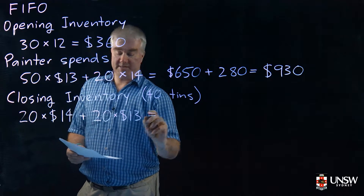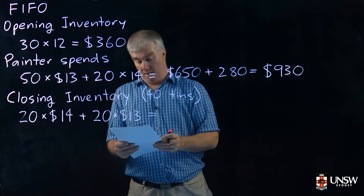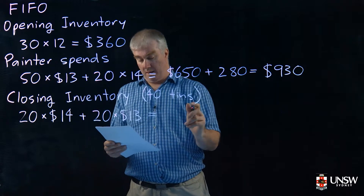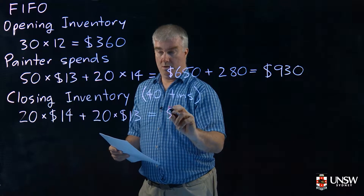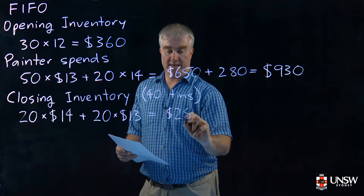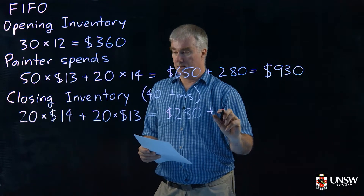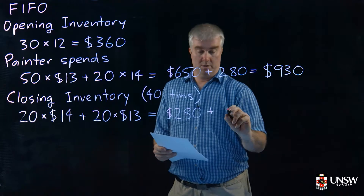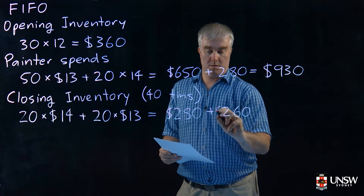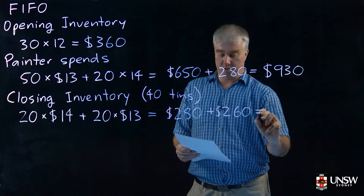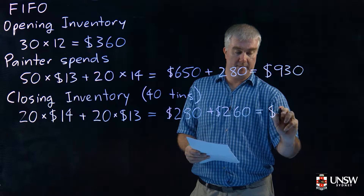That gives us 20 times $14 plus 20 times $13, which is $280 plus $260, giving a closing inventory value of $540.